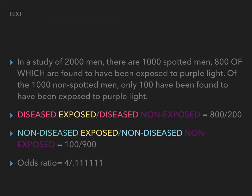My example for odds ratio: in a study of 2,000 men, there are 1,000 spotted men, 800 of which are found to have been exposed to purple light. Of the 1,000 non-spotted men, only 100 have been found to have been exposed to purple light. You take the diseased-exposed divided by the diseased-not-exposed, which is 800 over 200. The 800 comes from spotted men exposed to light; the 200 is inferred because 1,000 spotted men minus 800 exposed leaves 200 unexposed.